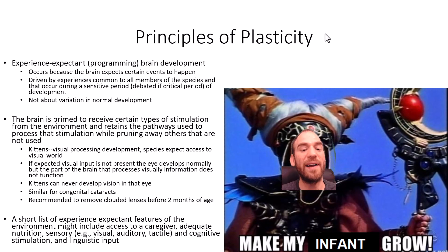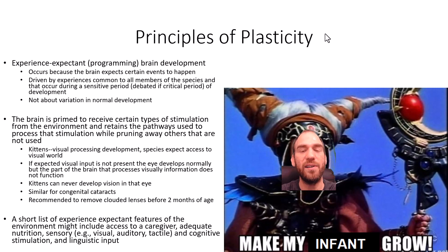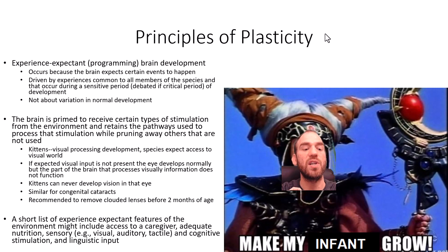The quicker you can address blockage of visual information, the better for the child. A short list of experience expectant features of the environment includes: access to a caregiver, adequate nutrition, sensory information — visual, auditory, and tactile — cognitive stimulation, and linguistic input. These must happen within a certain period. Without them, there will be under-development of those features with very limited catch-up growth possible.